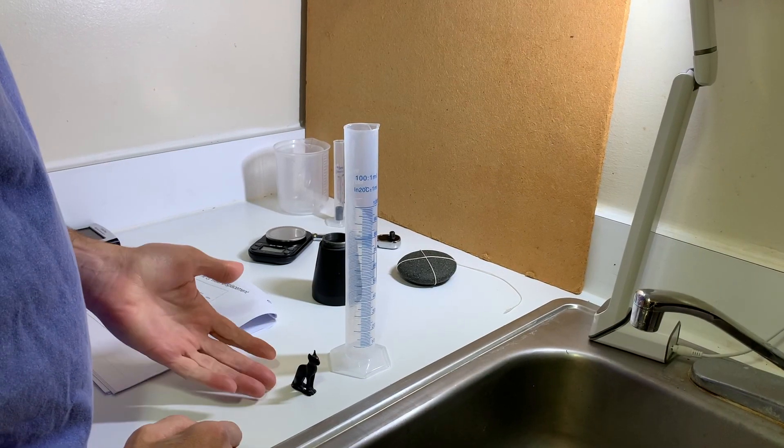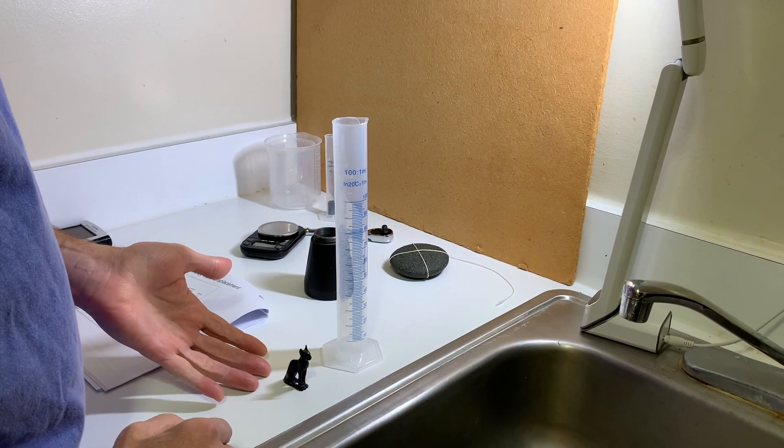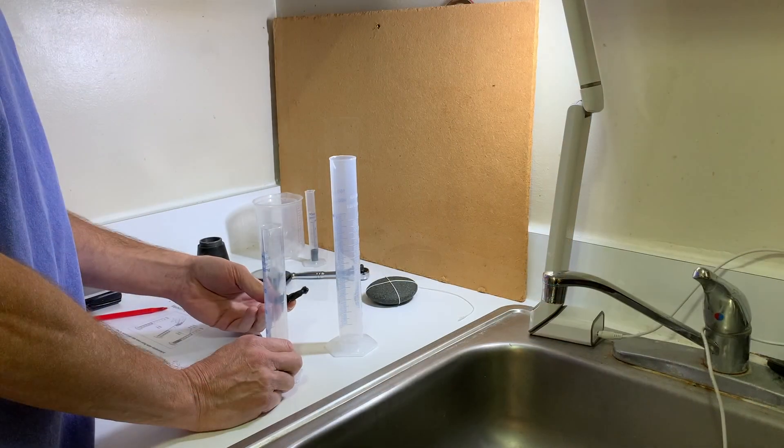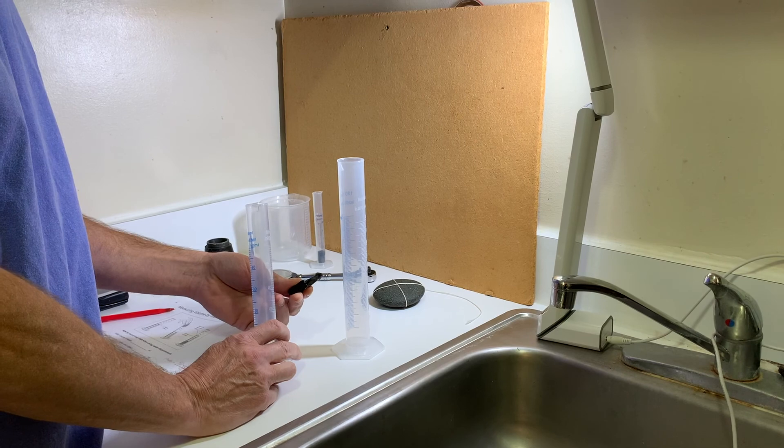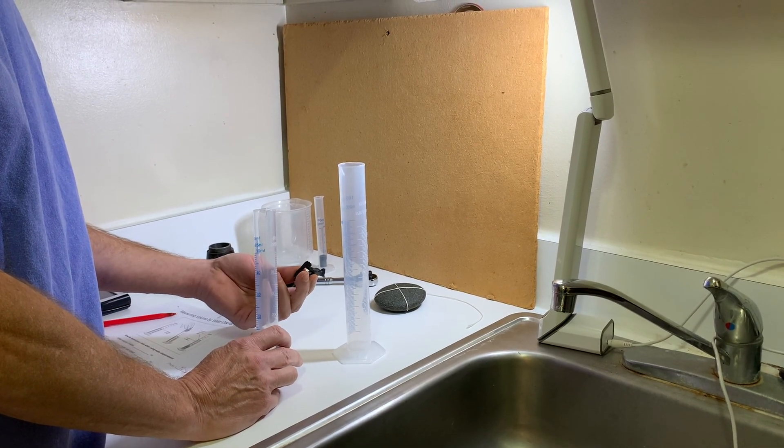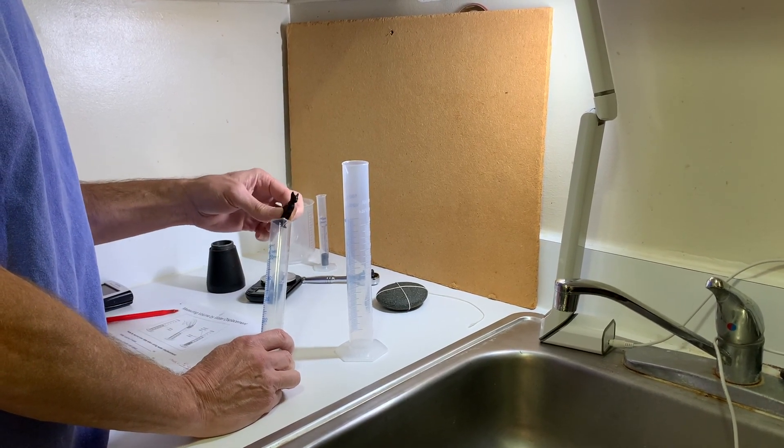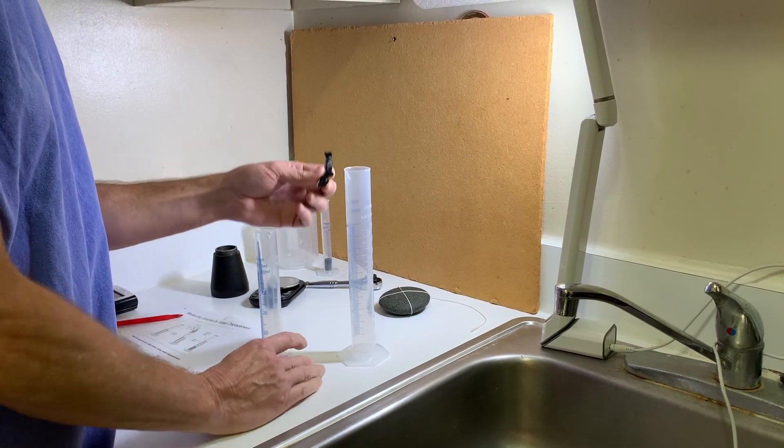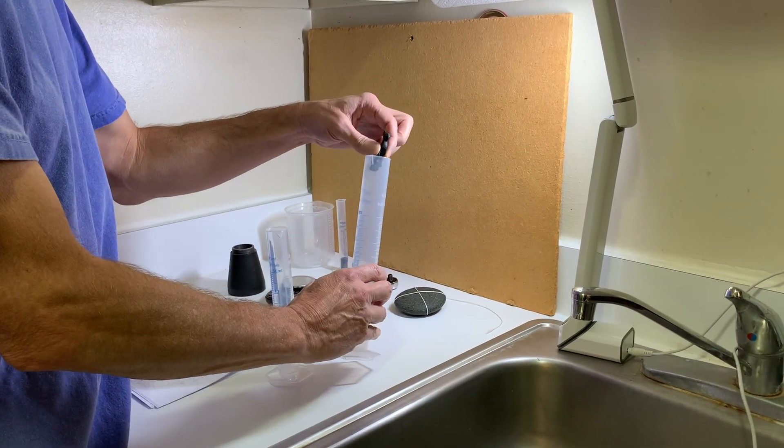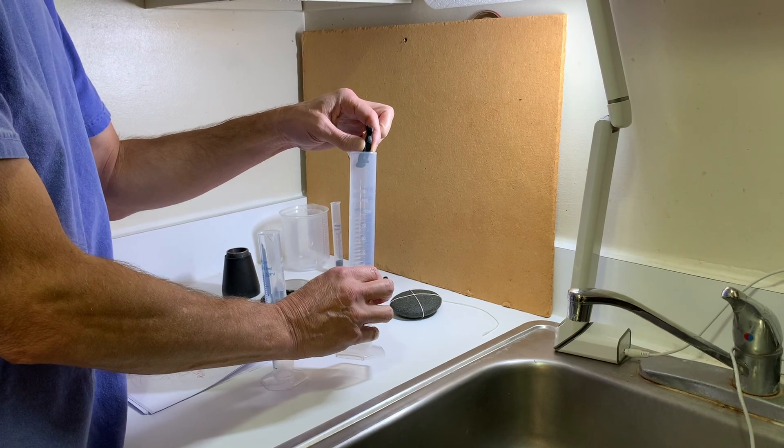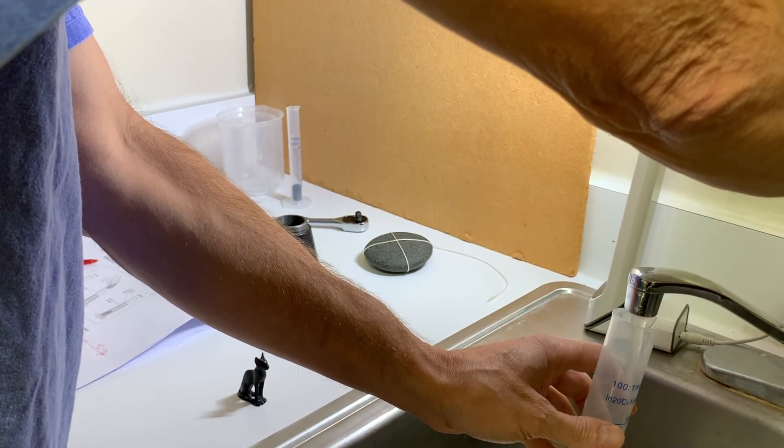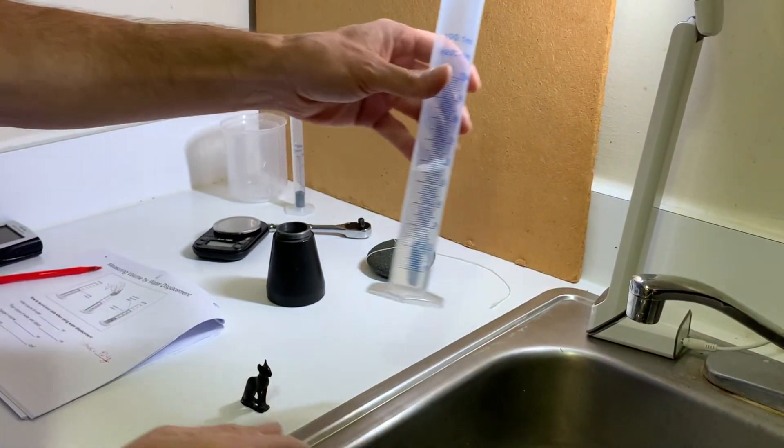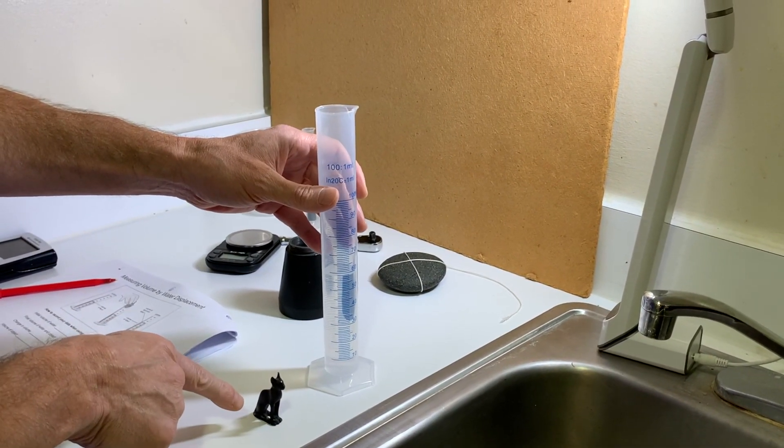So next we need to find the volume of the cat, which we're going to do by water displacement. Normally I would want to use a small graduated cylinder to get the volume here because it's a small object, but unfortunately it won't fit in. So I'm going to go with the next best because I can just get it in here, which is my 100 milliliter graduated cylinder.